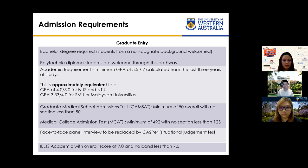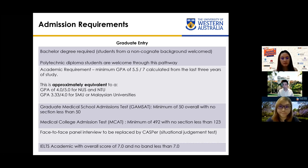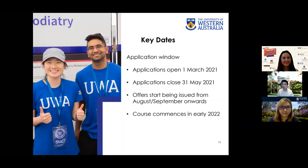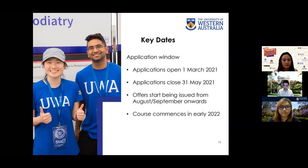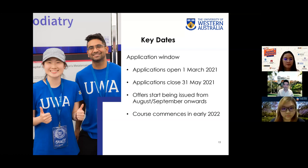The face-to-face panel interview this year will be replaced with the CASPer test. Graduate Entry students also need to provide an IELTS Academic test score of an overall 7 with no band less than 7. The application window opens 1st March and closes 31st May. By 31st May, students should have submitted a formal application with academic results and ISAT for the Assured Pathway, or GEMSAT or MCAT for Graduate Entry. Selected students will be invited for a CASPer test in the second half of the year, with first-round offers from late August or early September. The course commences in early 2022.